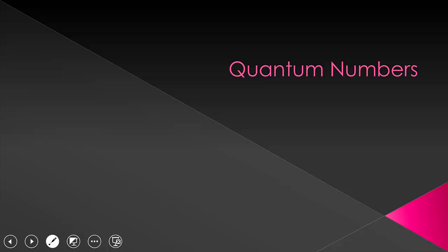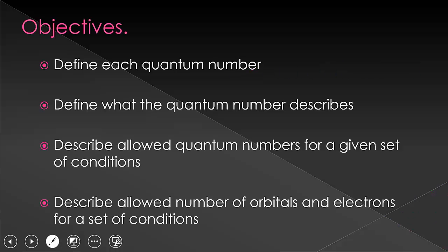Quantum numbers. In this video, we will talk about where quantum numbers come from and what we use them for. You'll want to be able to describe what quantum numbers are allowed given other quantum numbers, as well as deciding for a given set of quantum numbers if it is allowed, and if it is, how many orbitals or electrons are described by those numbers.